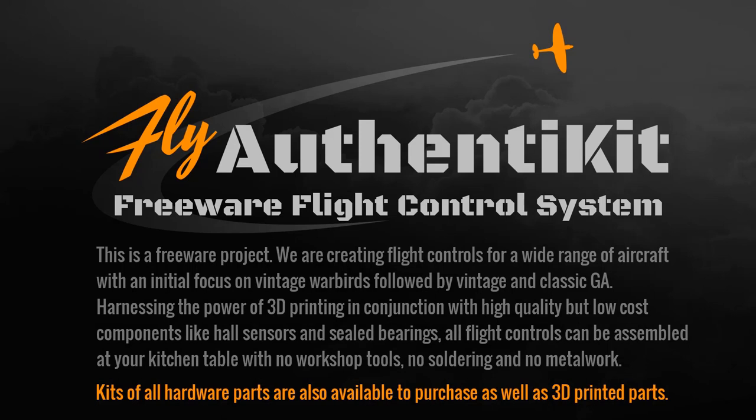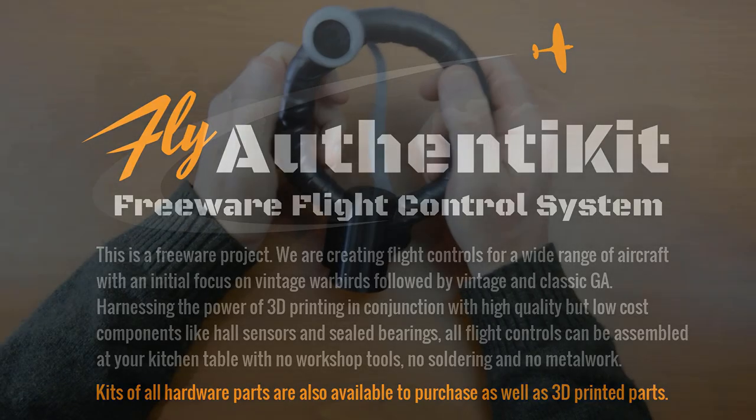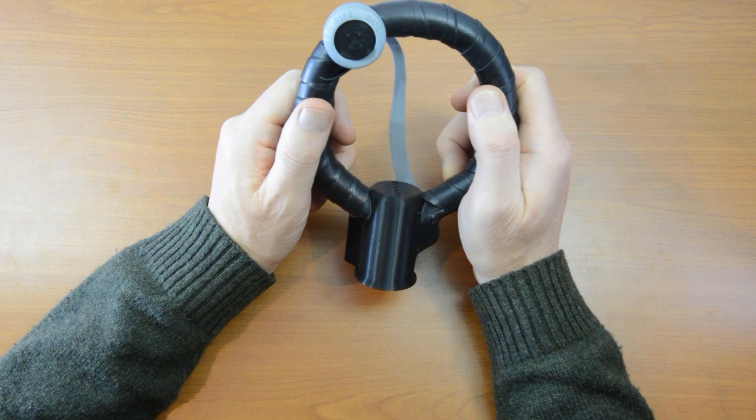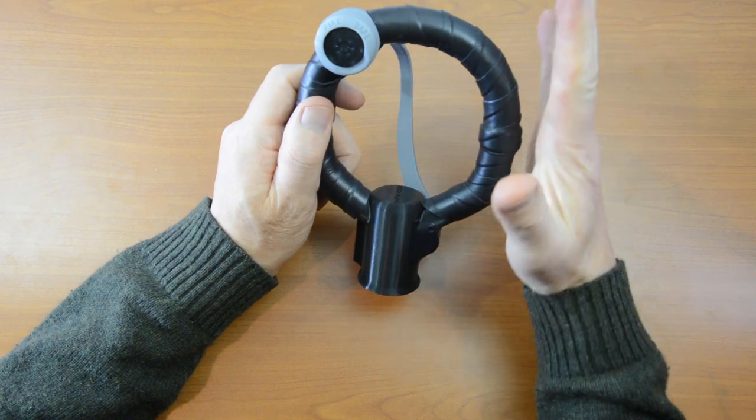You can source the parts yourself, or third parties are providing kits of all the hardware, as well as 3D printed parts. Now these flight controls are assembled from kits, and this video is the assembly guide for this Mk1a stick.